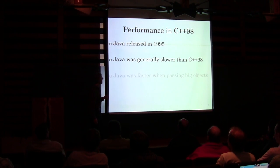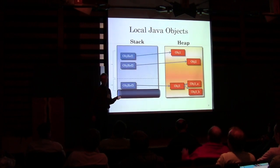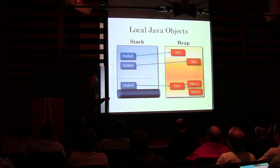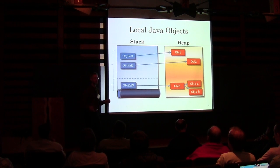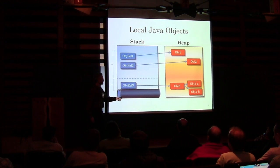Java was slower than C++, but Java was faster for passing big objects. Why was that? It really had to do fundamentally with the way Java dealt with data. Any significant size object — anything that was not a value type, and there are very few value types in Java — anything that was an object always went on the heap, and it was reference counted.